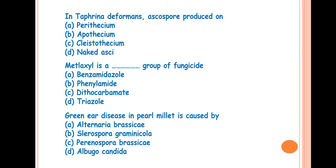The next question is, in Taphrina deformans, ascospores produced on? The answer is D, naked asci. Taphrina deformans is the causal organism of peach leaf curl. The main characteristic symptom is downward and inward curling of leaf. This fungus lacks any type of fruiting body or ascocarp, so the ascospores are produced on naked asci. Asci are formed directly from the binucleate ascogenous cell.